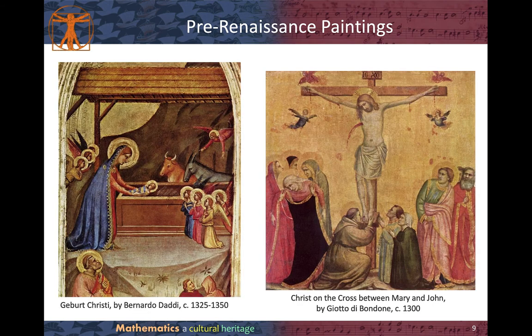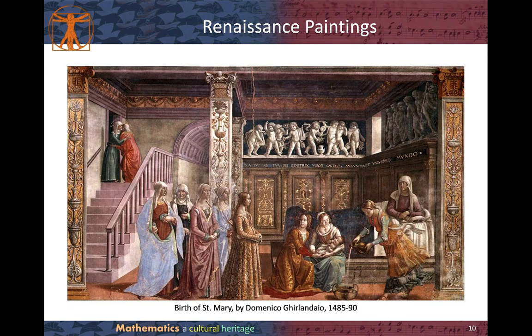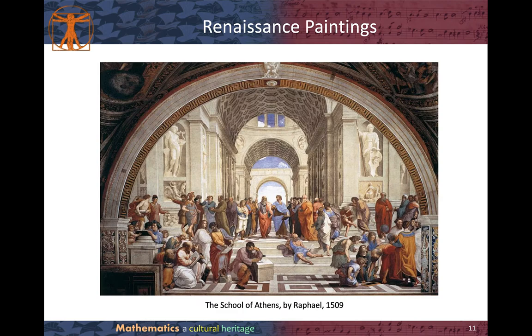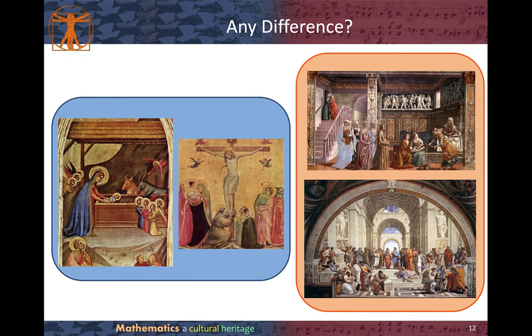Let's fast forward to pre-Renaissance paintings. These two paintings can be dated roughly at 1300. At that period of time, painters liked to use red, blue, and gold as colors, which is why these colors were very expensive then. This is a Renaissance painting — the very famous School of Athens by Raphael in 1509. Can you tell if there is any significant difference between them? The main difference is the use of perspective.